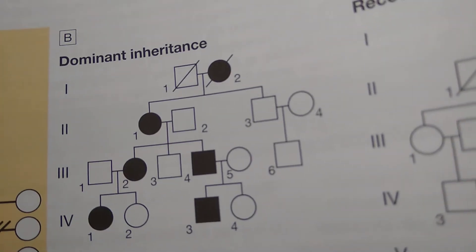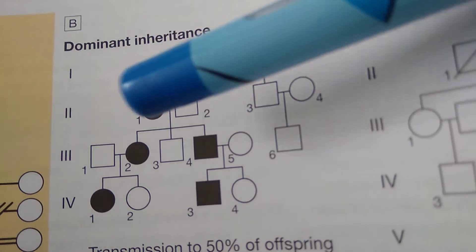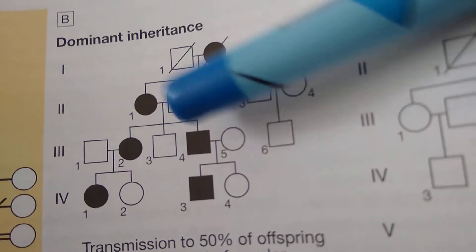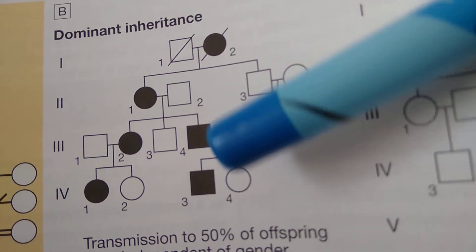Now let us look at some dominant inheritance. Now what are you seeing here? The female is affected here, the female is affected here. So somebody or the other is affected in every generation. So this is kind of dominant. As soon as you see, you can see somebody or the other is affected in every generation.